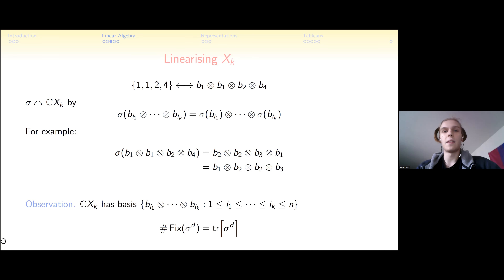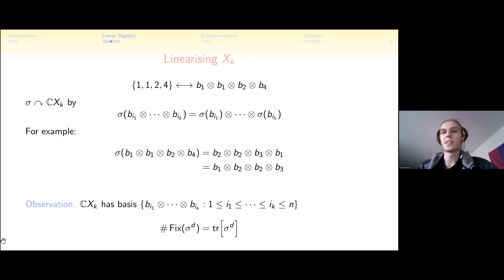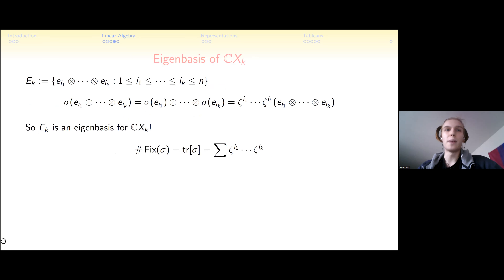The key observation is that a basis for this vector space is given by k-fold products with weakly increasing values — weakly increasing because we allow repeated elements. We have a basis, an action of sigma, and the trace counts fixed points. Just as in the k=1 case, we construct a new eigenbasis by taking the k-fold tensor product of the eigenbasis e_i, using weakly increasing sequences.